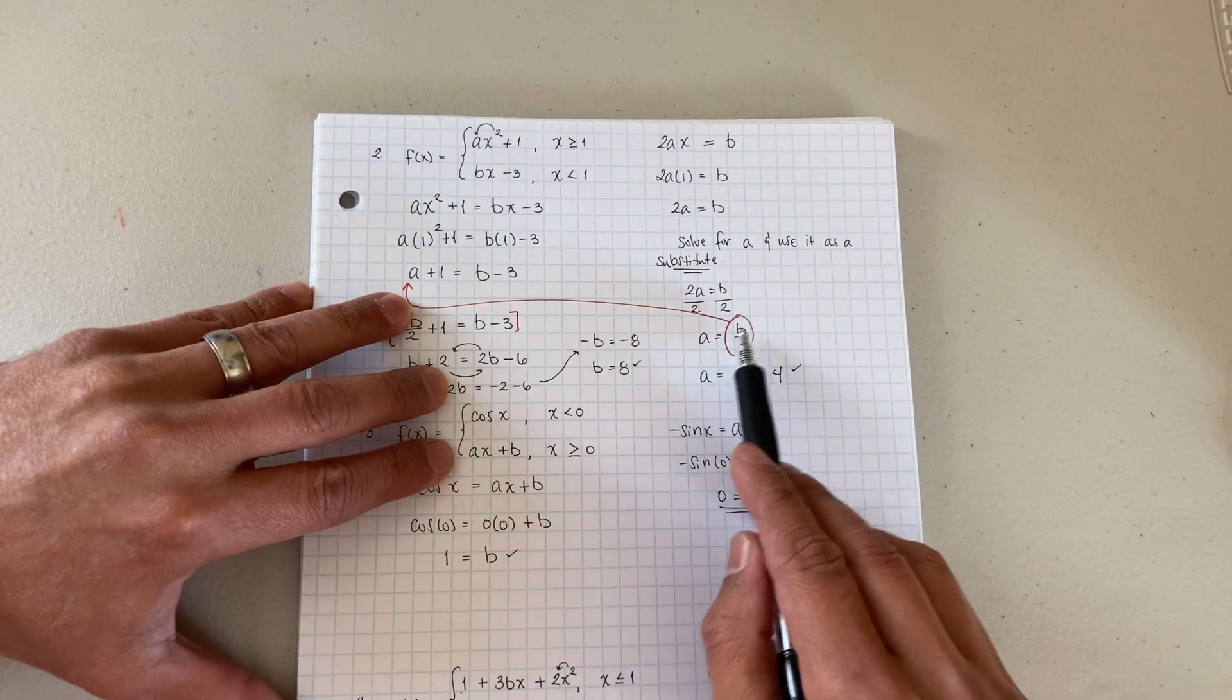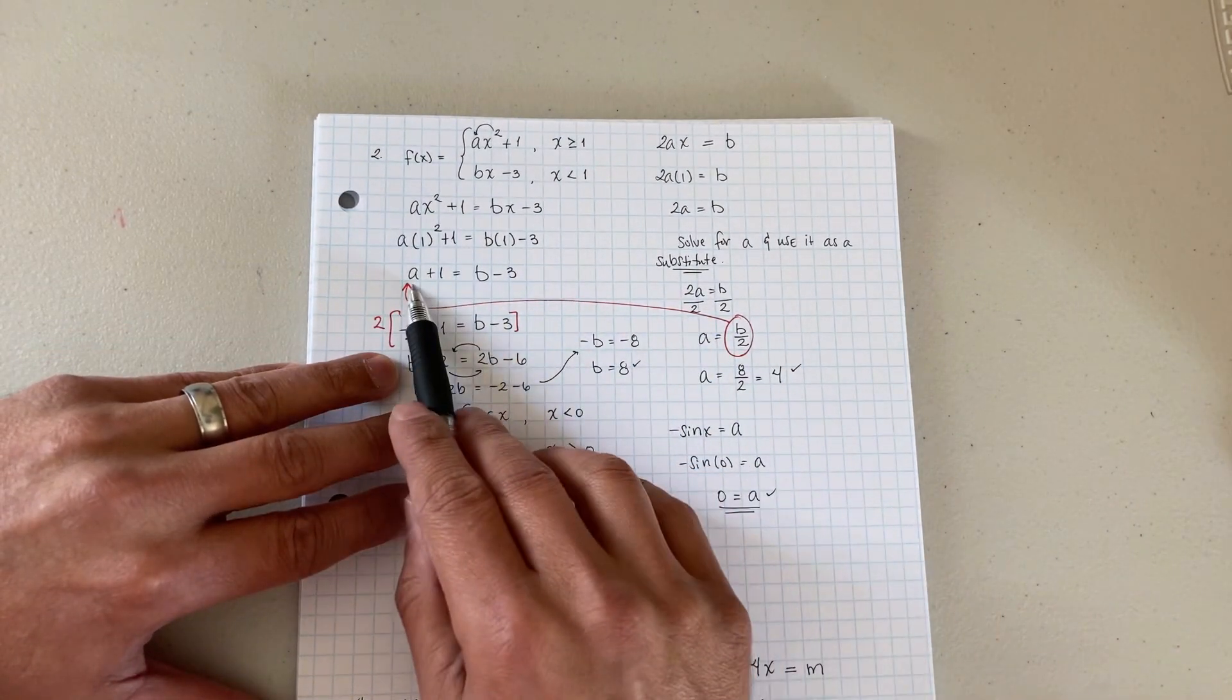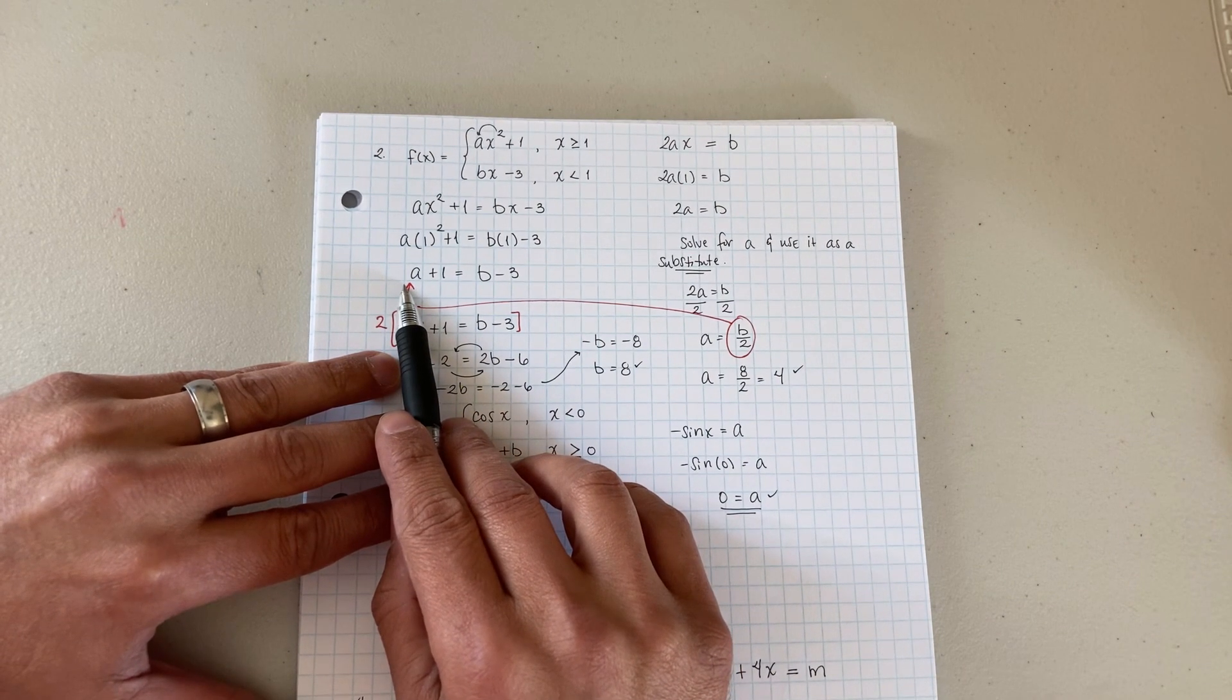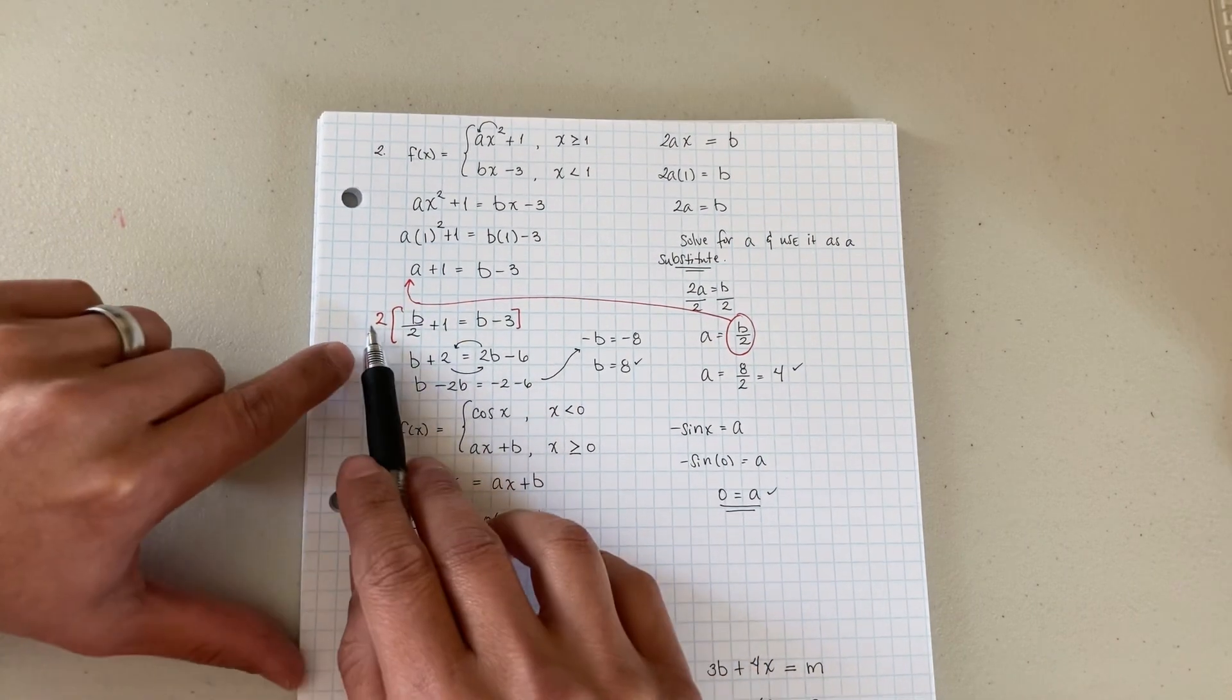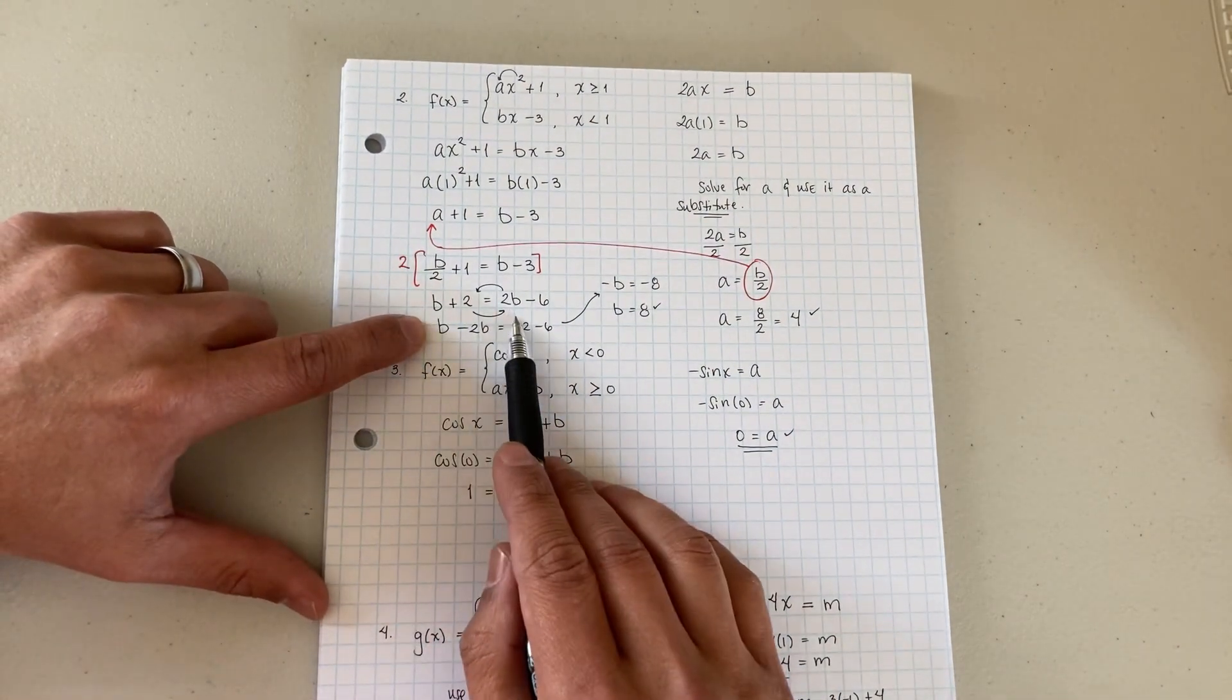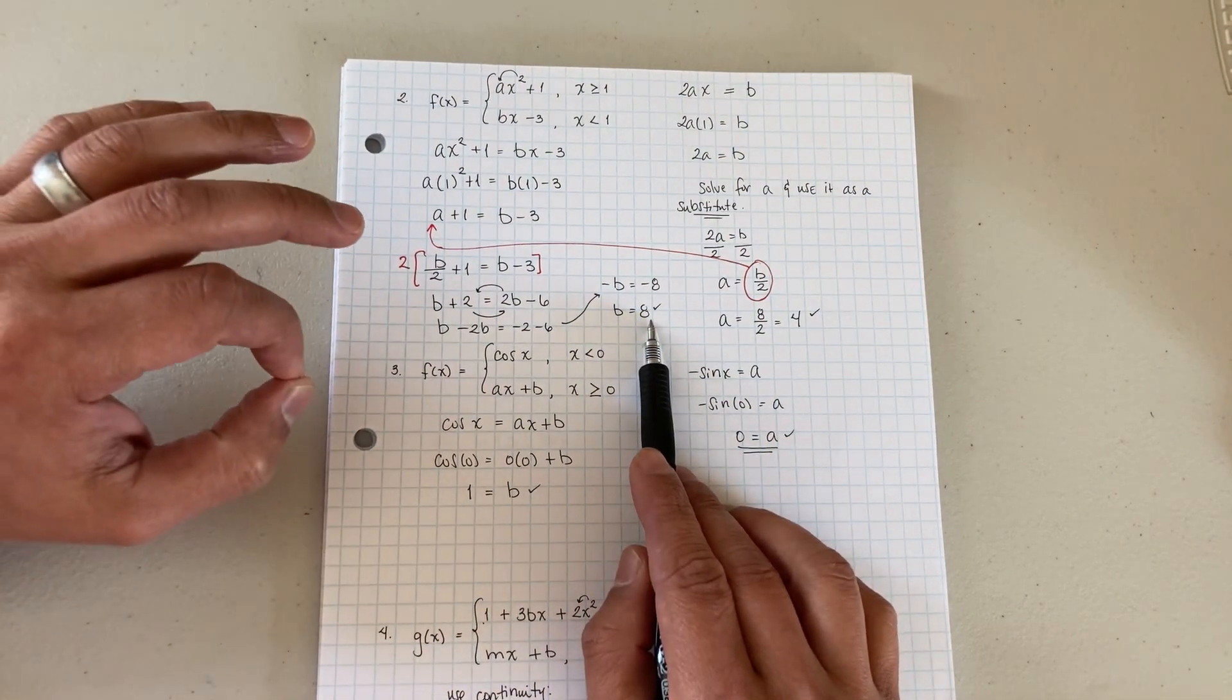So right here I divided by 2 and I ended up with a is equal to b over 2. So now I take this guy, plug it back into the other one with continuity. And then I'm able to solve it: b over 2 plus 1, and then just do some algebra. I decided to multiply everything by 2.